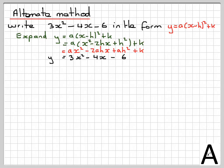Now, if we write down our function, so we're going to compare the coefficients. So a must be equal to 3, minus 4 must be equal to minus 2ah, and minus 6 must be equal to ah squared plus k. That's called comparing the coefficients.